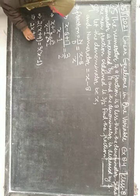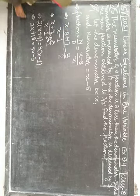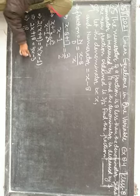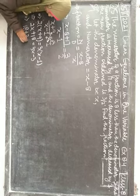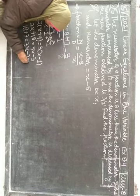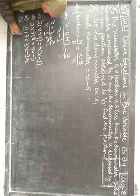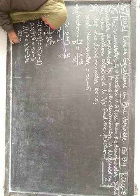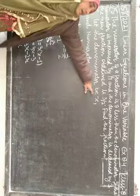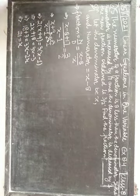Brackets ko open karein: 2x plus 18 equals 3x minus 3. Brackets open karein — ek mistake jo nahi karni hai. 18 minus 3 ko yahan le aaye: plus 3; 3x minus 2x. 18 plus 3 is 21, and 3 minus 2 is 1, to x ki value nikal gayi. Ab x kya hai? Denominator. Is denominator mein kya hoga? 21.